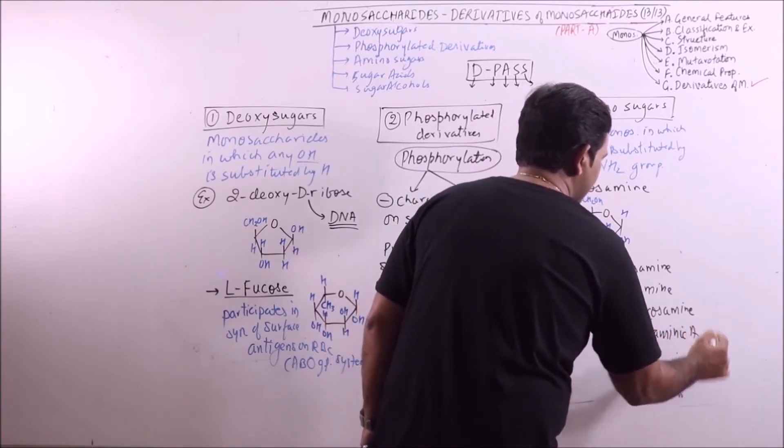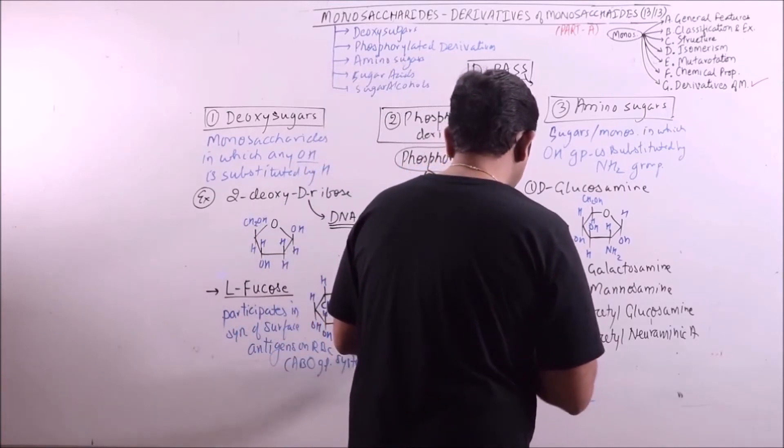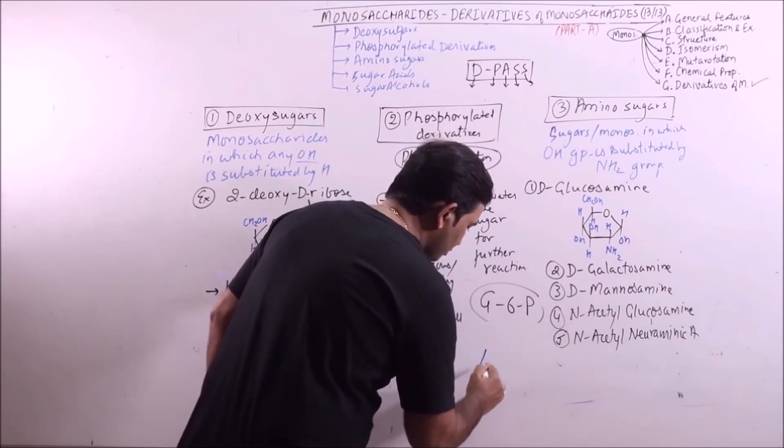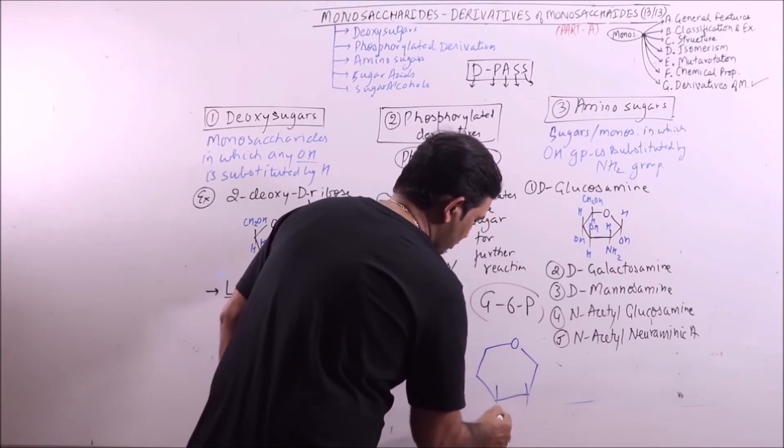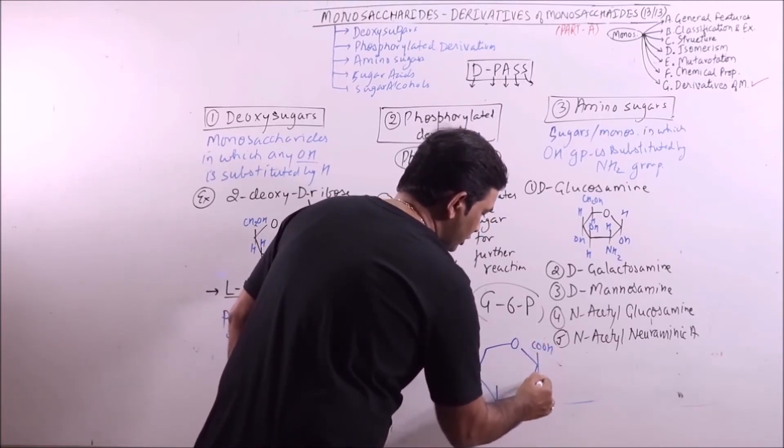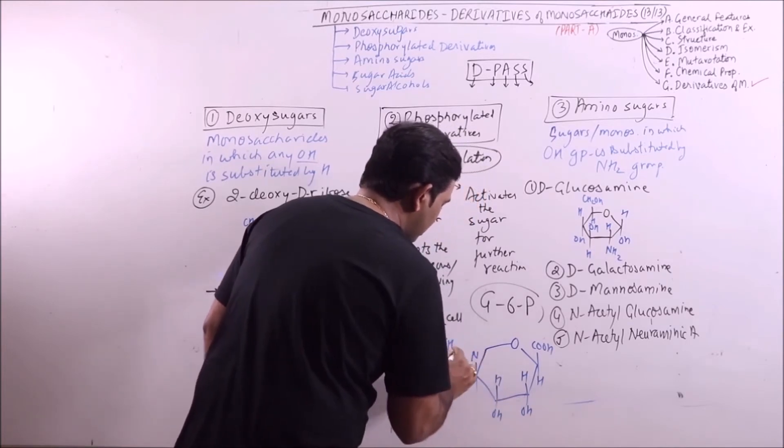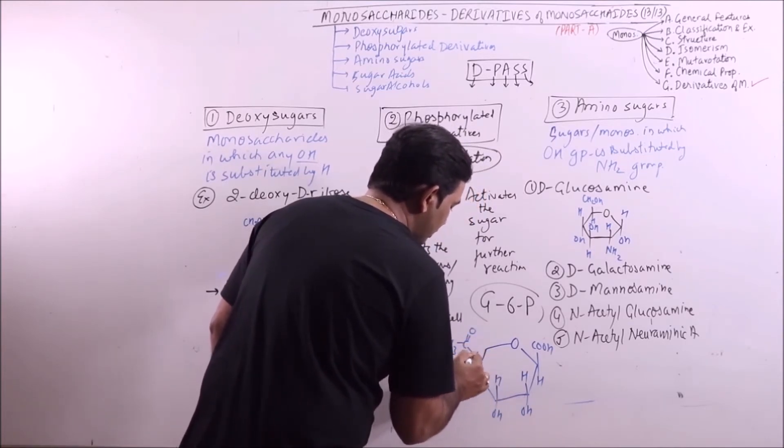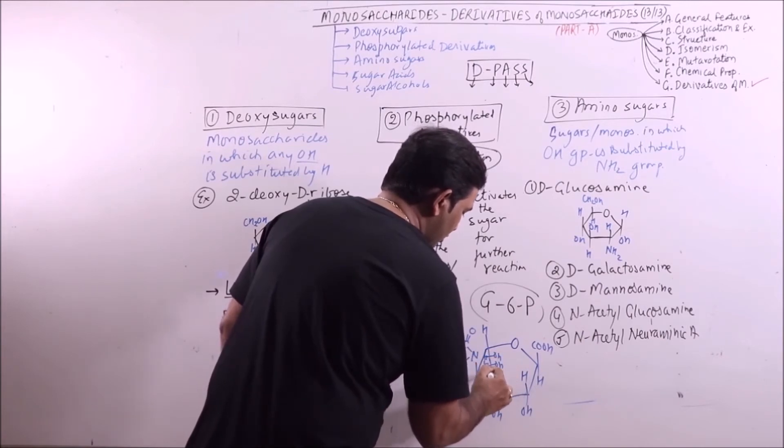N-acetyl neuraminic acid. What is the structure of N-acetyl neuraminic acid? COH, H, OH, H, OH, N, CH3, C, and CH2, OH.